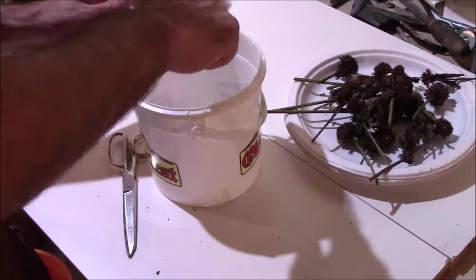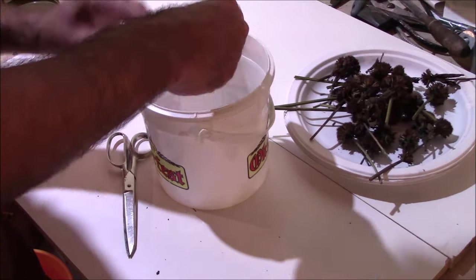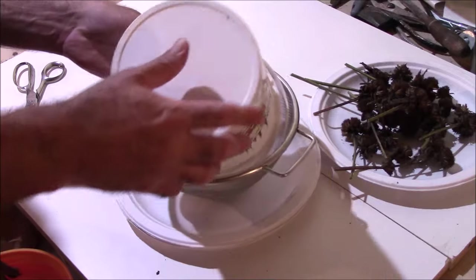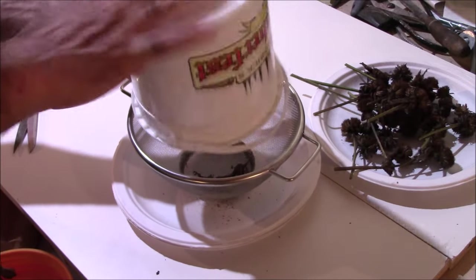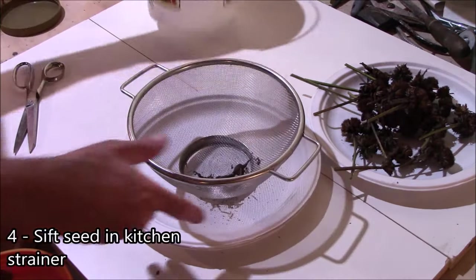It does so more easily on red bee balm than other species of Monarda. Just basically go through and process them all, put them through a kitchen strainer to get rid of some of the chaff, and see what you get.